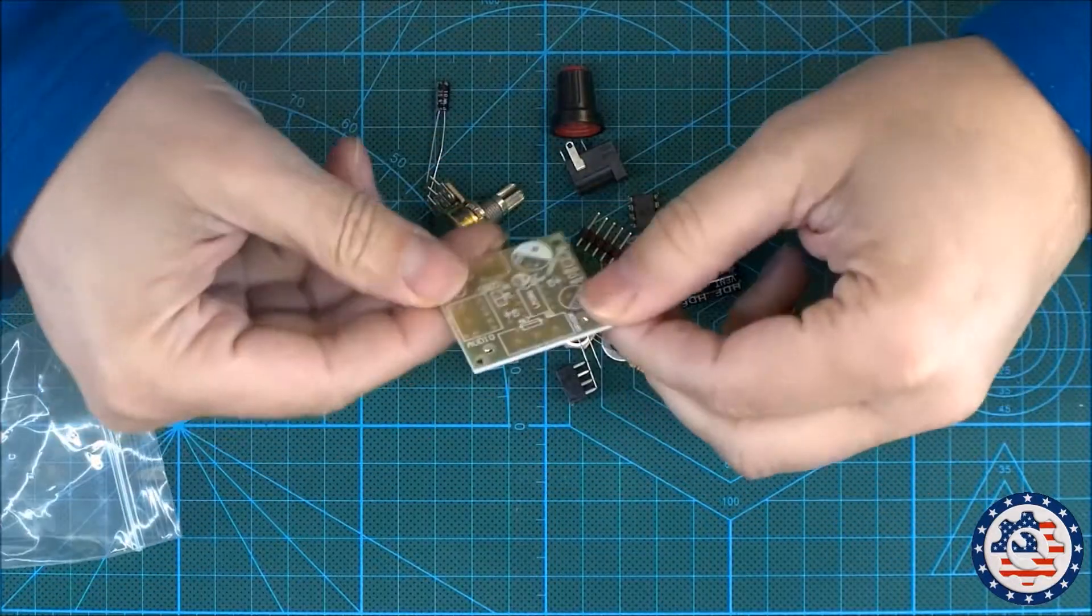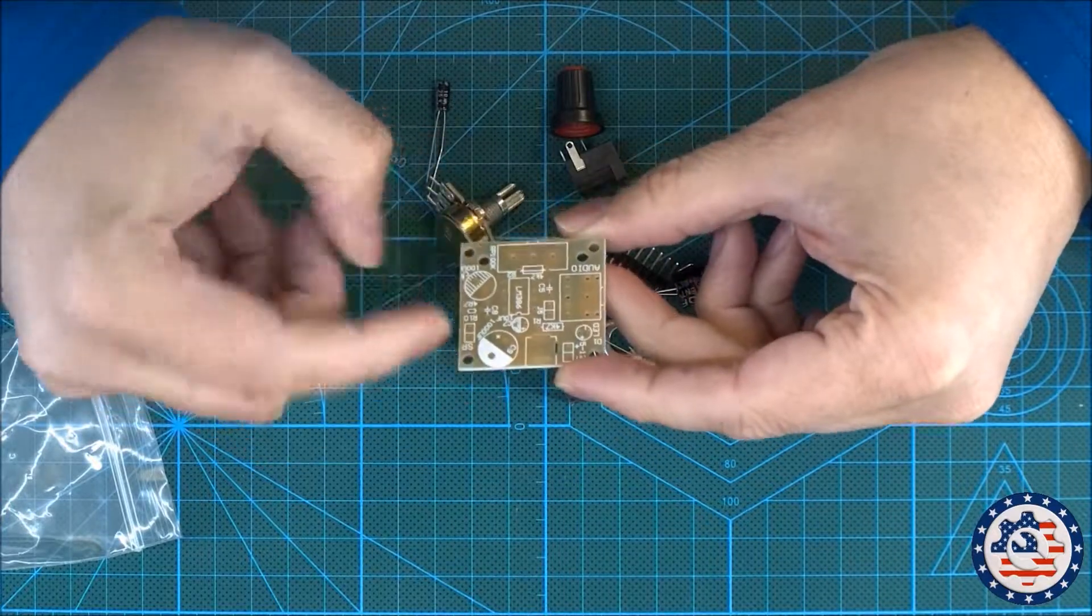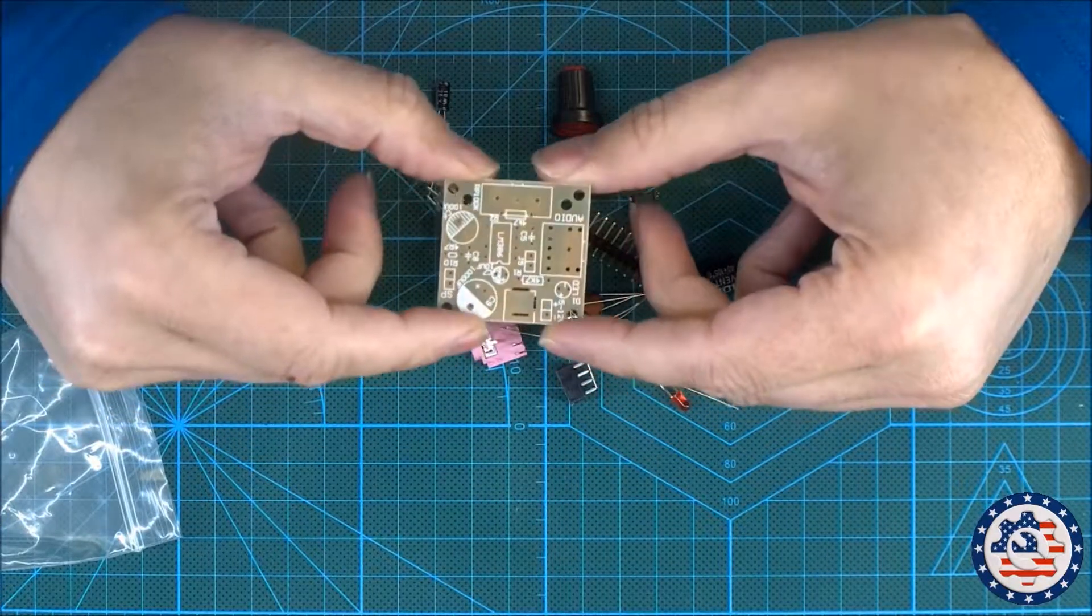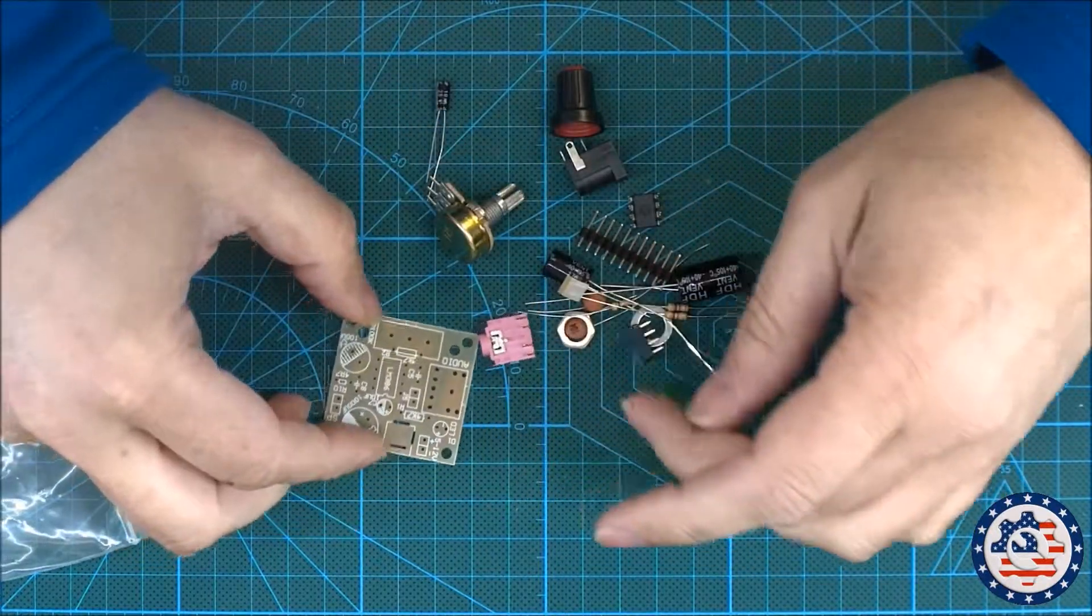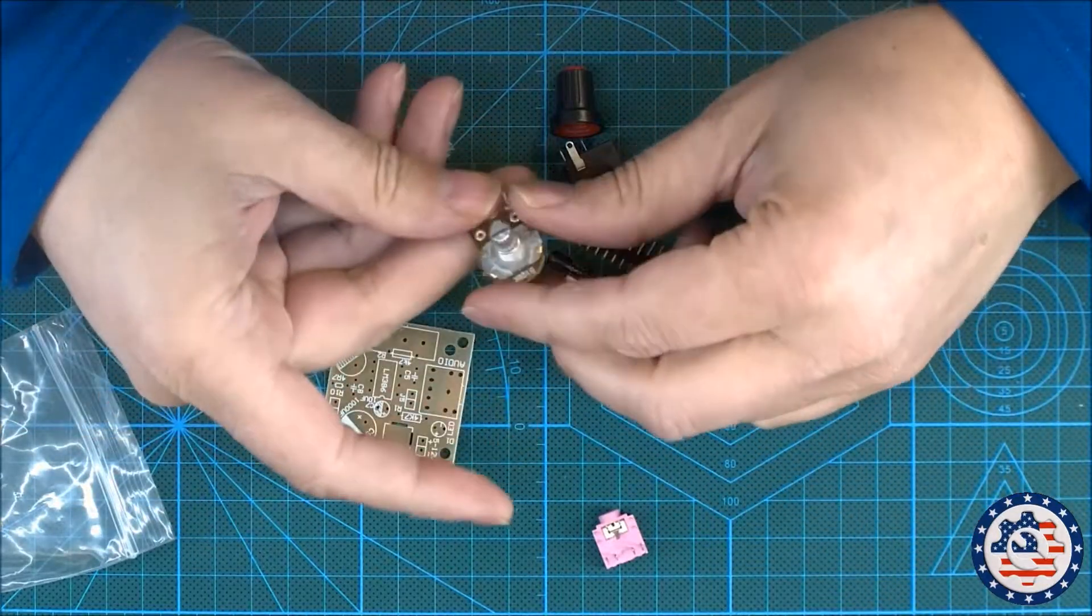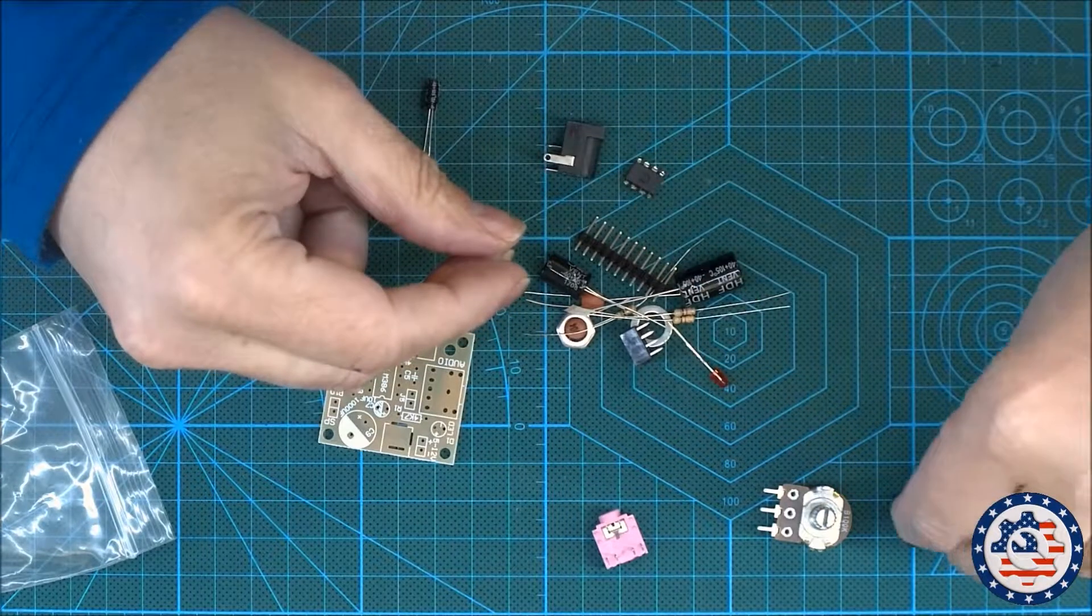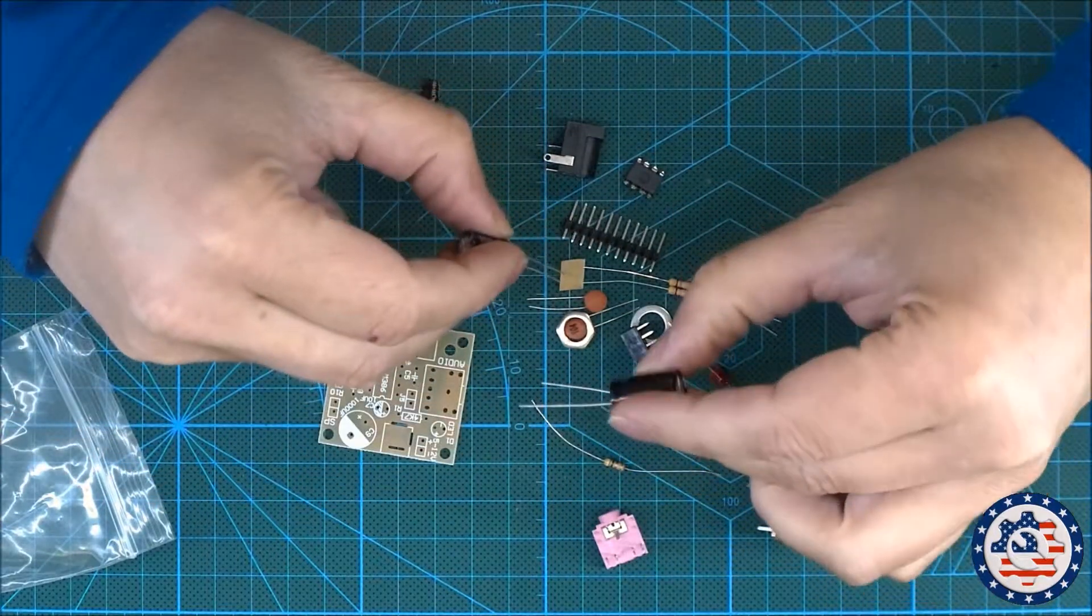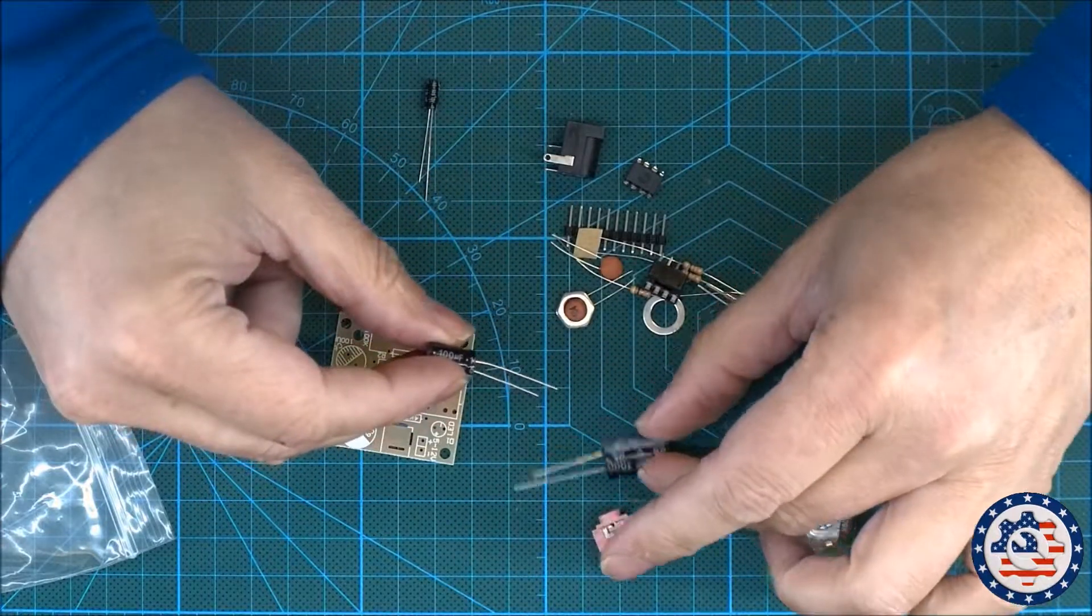Here's a small PCB. You can see the screen printing there with all the component names laid out, so it should be straightforward to assemble this. We have an audio jack, a pot, the top of the pot, a 1000µF 25-volt capacitor.